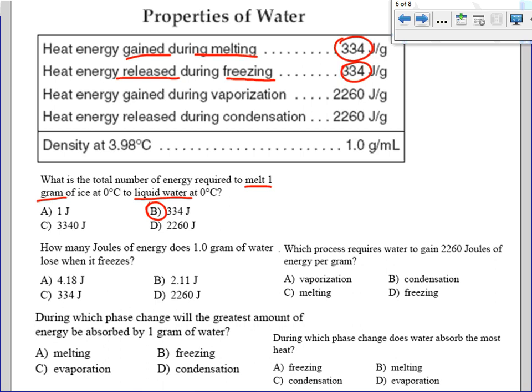During which phase change will the greatest amount of energy be absorbed by one gram of water? The greatest amount of energy absorbed means it's gaining. The best choice would be vaporization, so it would be choice C, evaporation.